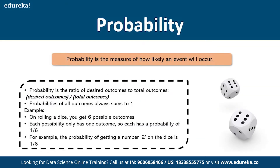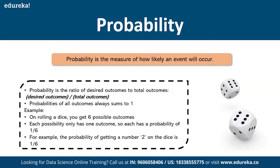Starting with probability: probability is a measure of how likely an event can occur. For example, when you throw a dice, the probability of getting a one is 1/6. When you toss a coin, the probability of getting heads or tails is 1/2, which is 0.5. So probability is about the chance of an event occurring.